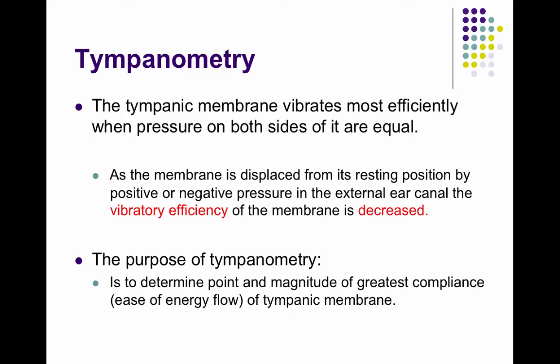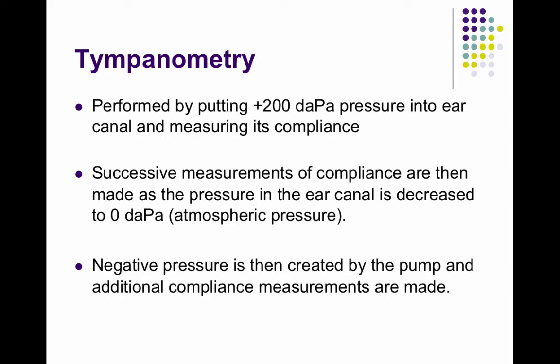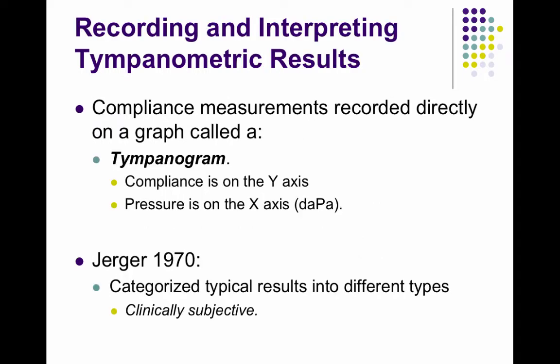If your tympanic membrane is healthy, that would be at zero deca-pascals, at atmospheric pressure. Tympanometry is performed by putting 200 deca-pascals of pressure into the ear canal and measuring the compliance, then successively measuring compliance as the pressure is changed from 200 deca-pascals down to zero, and then to negative 200 deca-pascals. The compliance measurement is recorded on a graph called the tympanogram, with compliance on the y-axis and pressure on the x-axis.